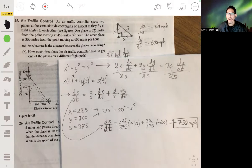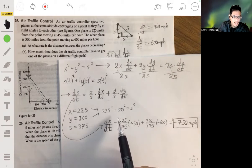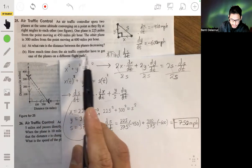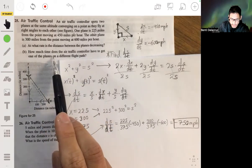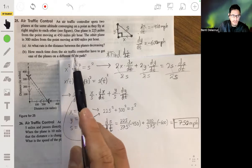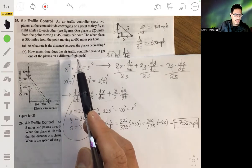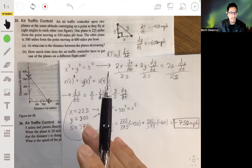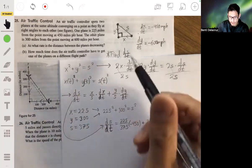So now let's look at part B. Part B is saying, how much time does the air traffic controller have to get one of the planes on a different flight path? So how much time would they crash going at this rate if they didn't change the paths of the flight?